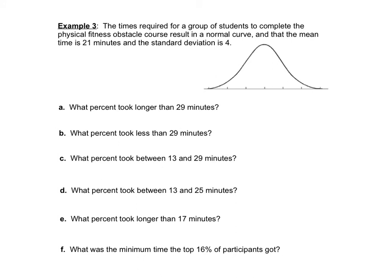Here's one more empirical rule problem. Students completing a physical fitness obstacle course have normally distributed times with a mean of 21 minutes and a standard deviation of 4. Place 21 at the center; count up by 4s: 25, 29, 33 above, and 17, 13, 9 below. Then fill in the percentages: 34%, 13.5%, 2.35%, and 0.15% on each side.